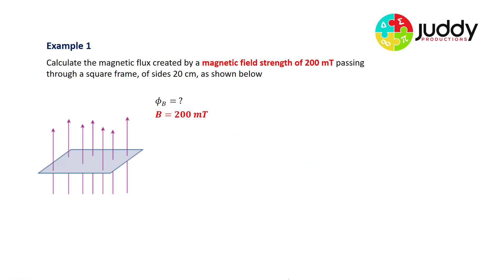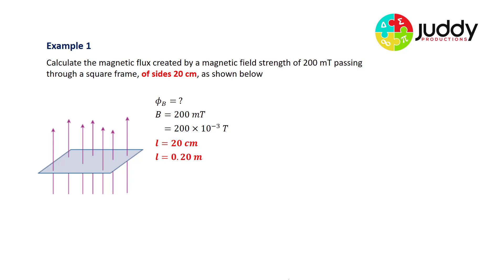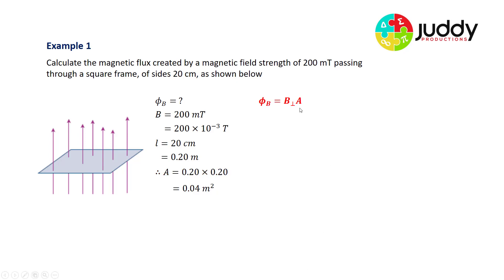The magnetic field strength is 200 milli-tesla, which is 200 × 10⁻³ tesla. The side length is 20 centimeters, converted to 0.20 meters, giving an area of 0.2 × 0.2 = 0.04 meters squared. Using Φ = B × A, substituting in 200 × 10⁻³ tesla and 0.04 m², we get a magnetic flux of 0.008 weber, which can be written as 8 × 10⁻³ weber, or 8 milli-weber.